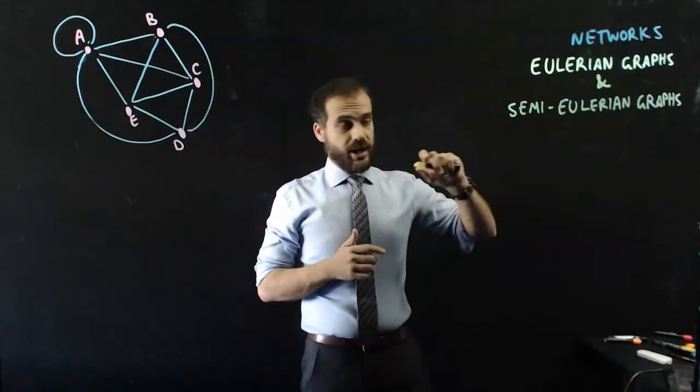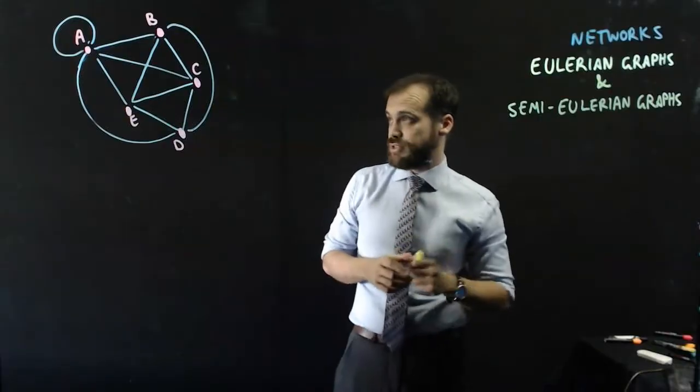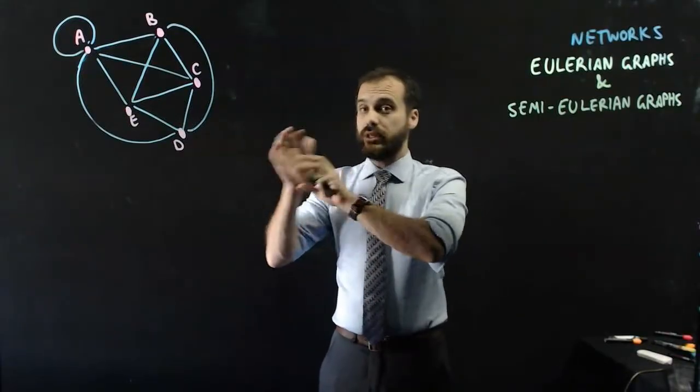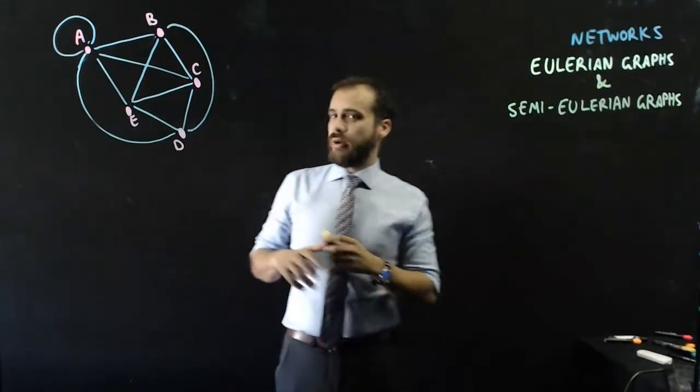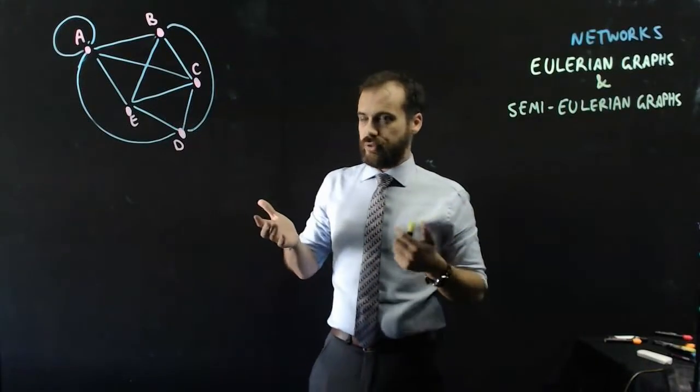So our good friend Euler is back with Eulerian graphs and semi-Eulerian graphs. This is an Eulerian graph. I'm feeling very confident about that. Now, what is an Eulerian graph? Okay, so here is a point A.